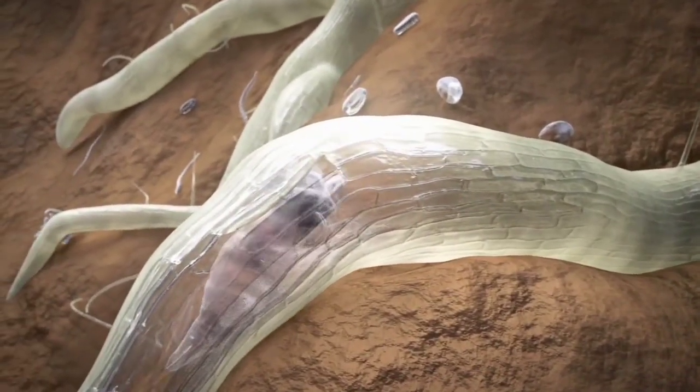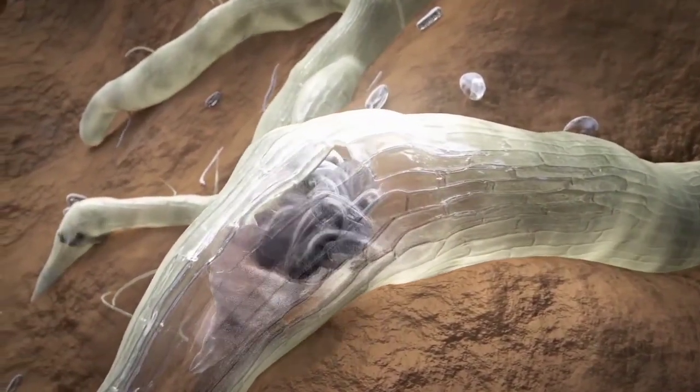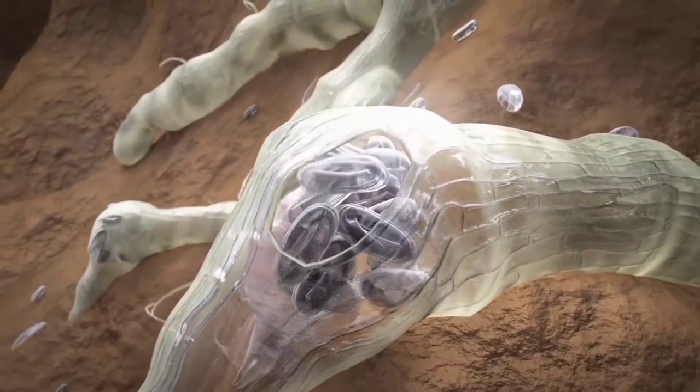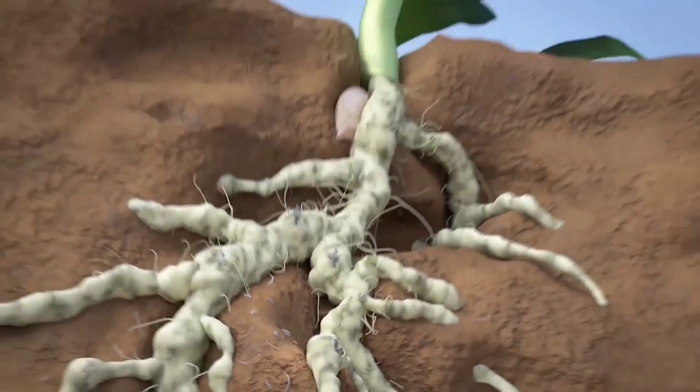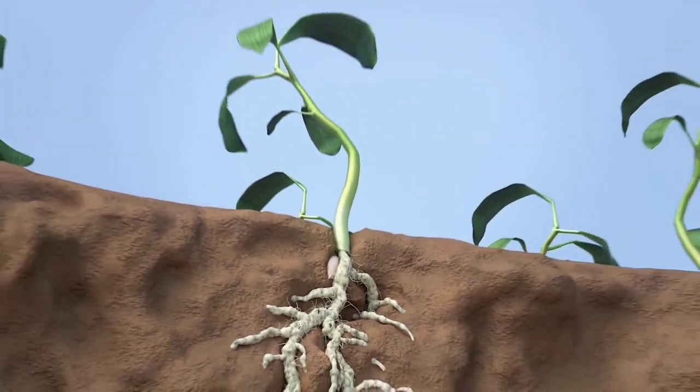Nematodes penetrate the root, start to reproduce, and cause root galling. They suck water and nutrients from the root system. Infested plants suffer and show poor growth.